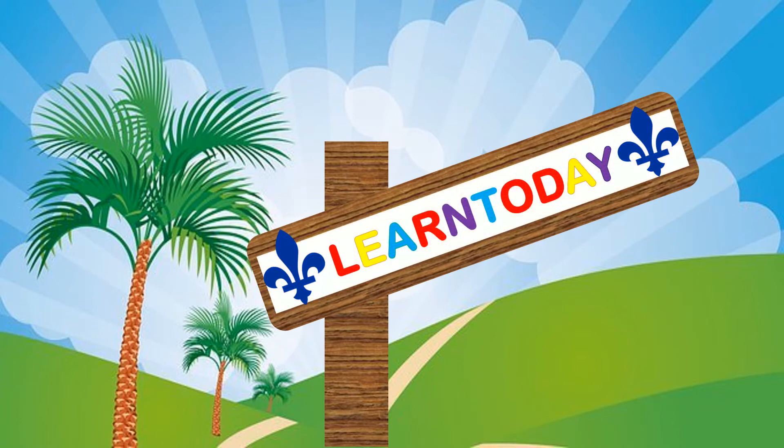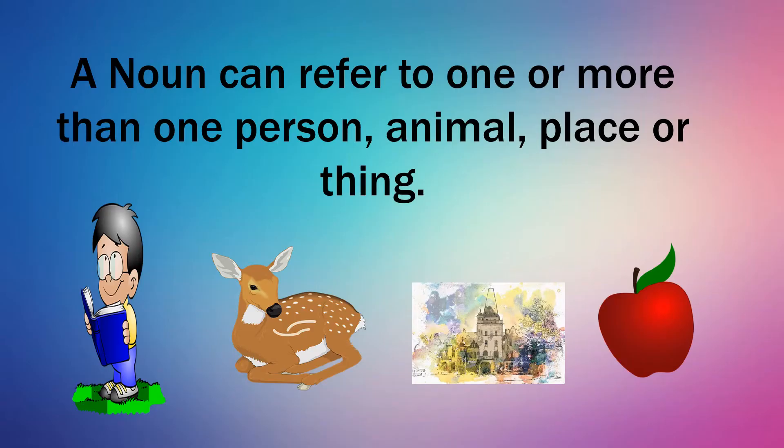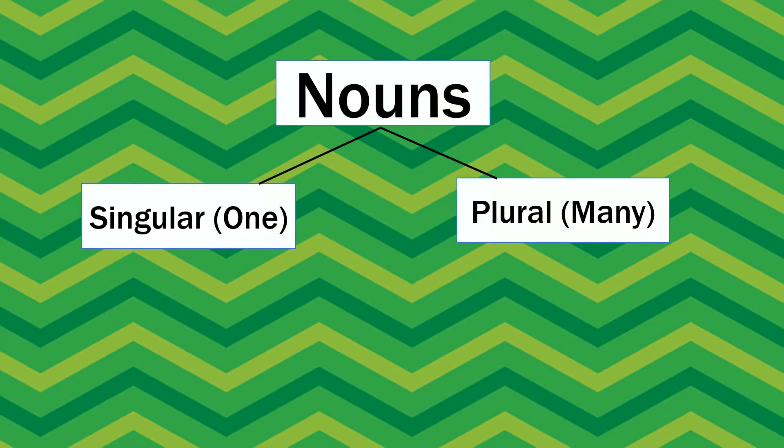Learn today. Today we are going to learn about singular and plural nouns. A noun can refer to one or more than one person, animal, place or thing. There are many types of nouns. Today we are going to look at singular noun and plural noun.